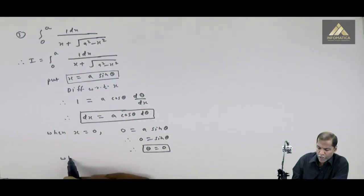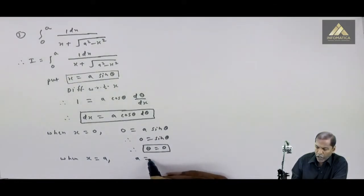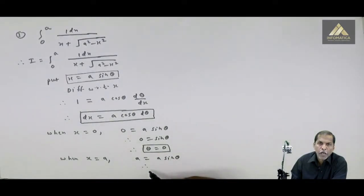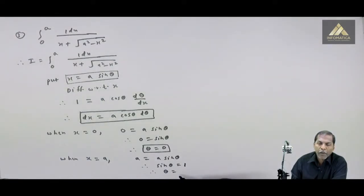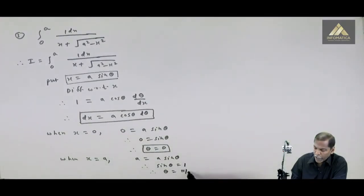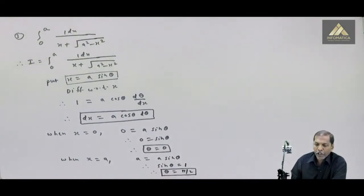Now when x equals the upper limit a, replacing in the substitution gives a equal to a sin theta. Observing that a cancels, it means sin theta equal to 1, so theta equals 90 degrees, therefore theta takes the value pi by 2. So we have now changed the limits as well.